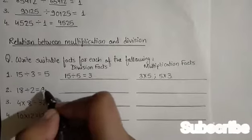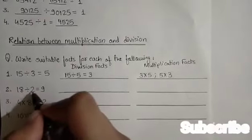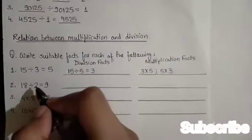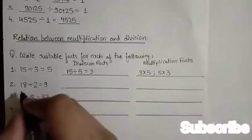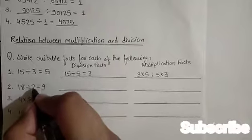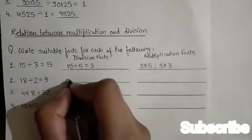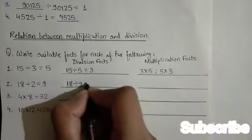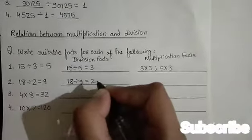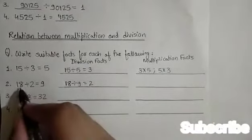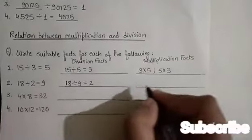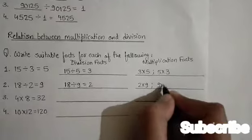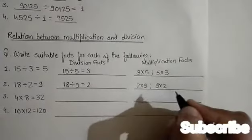Now let us solve one more. 18 divided by 2 equals 9. Ye ek division fact hai, toh iska ek division fact hooga aur iske do multiplication fact. When we divide 18 by 9, we get 2 as quotient. So the division fact is 18 divided by 9 equals 2, and the multiplication facts are 2 into 9 equals 18 and 9 into 2 equals 18.